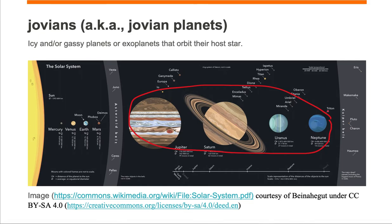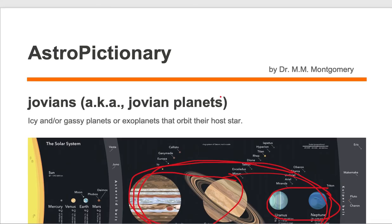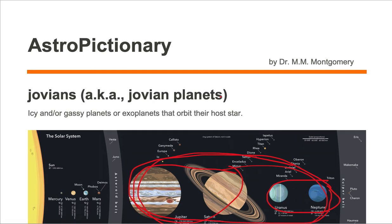The icy ones are Uranus and Neptune, whereas the gaseous ones are Jupiter and Saturn, but collectively the four of them are known as Jovians or Jovian planets.